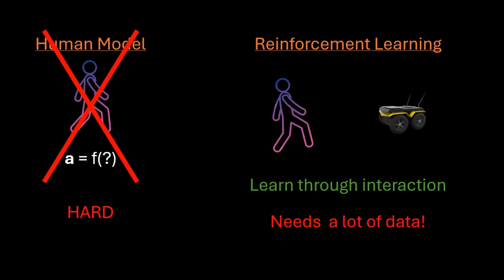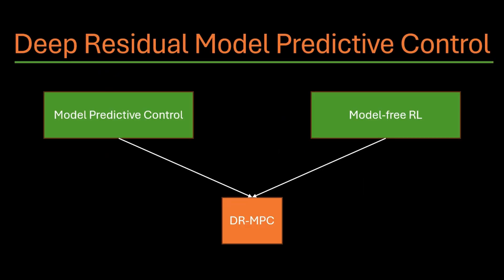Now there's one major limitation of RL. It requires a lot of data. To greatly speed up learning, we integrate MPC with model-free RL to bring us deep residual model predictive control, or otherwise called Dr. MPC.